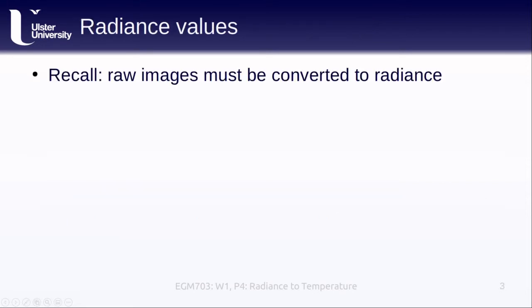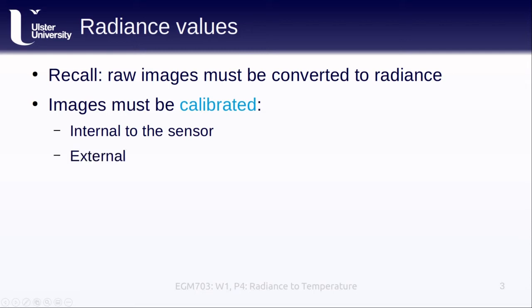In order to estimate temperature from a satellite image, the image values need to be converted from digital numbers or DN values to radiance. To do this, the sensor and the images have to be calibrated. This is normally done in one of two ways: either internally to the sensor, normally using an onboard blackbody with a known radiance and temperature, or externally using objects with known radiances that are visible in the image itself.